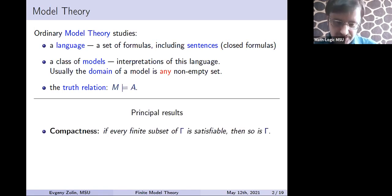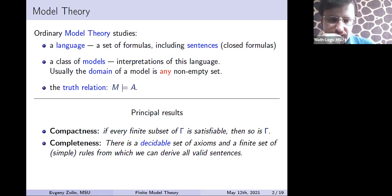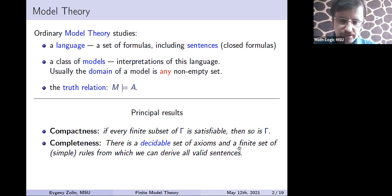There are some key elements in model theory. We have the compactness theorem: if every finite subset of a set of formulas gamma is satisfiable, then the whole set is satisfiable. We also have completeness — the set of all valid formulas, all formulas true in all models, can be described in a nice way. We can write a decidable set of axioms such that they axiomatize all valid sentences together with simple rules of inference: modus ponens and generalization.